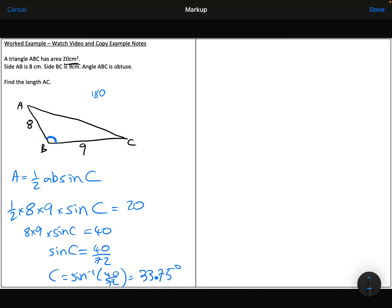So 180 minus 33.75, and I find that the obtuse angle is 146.25.